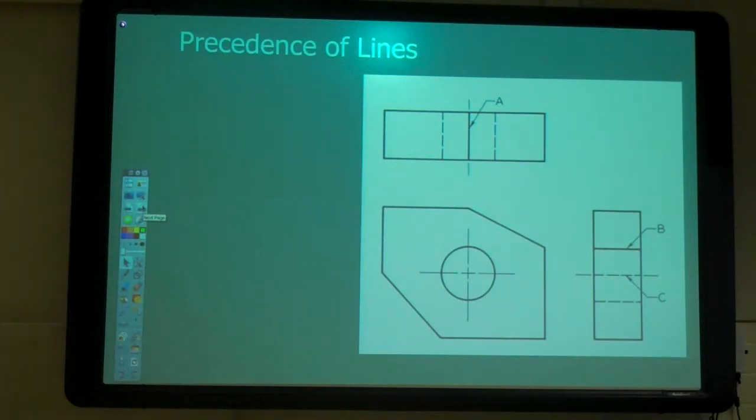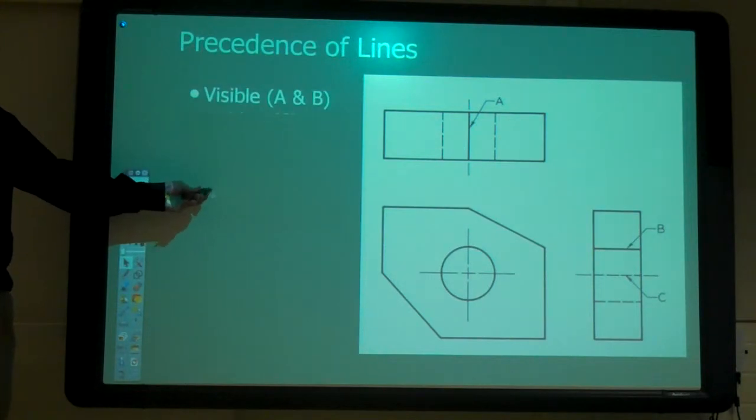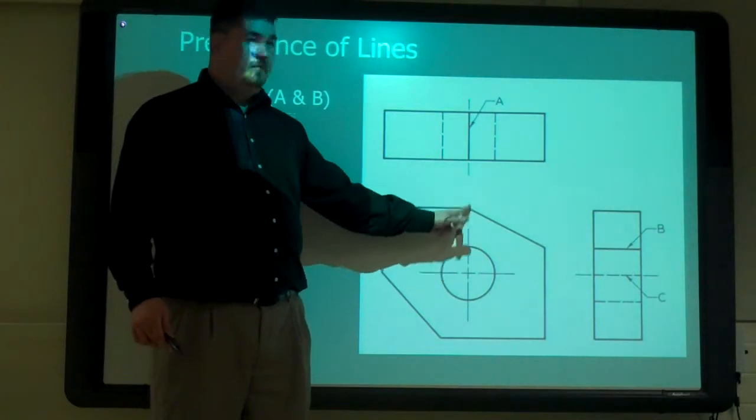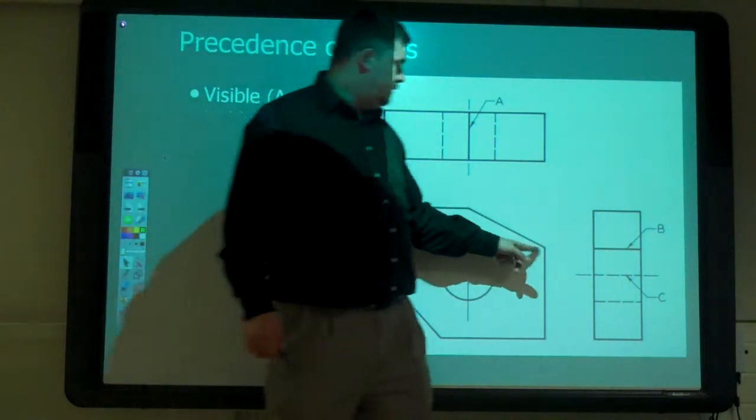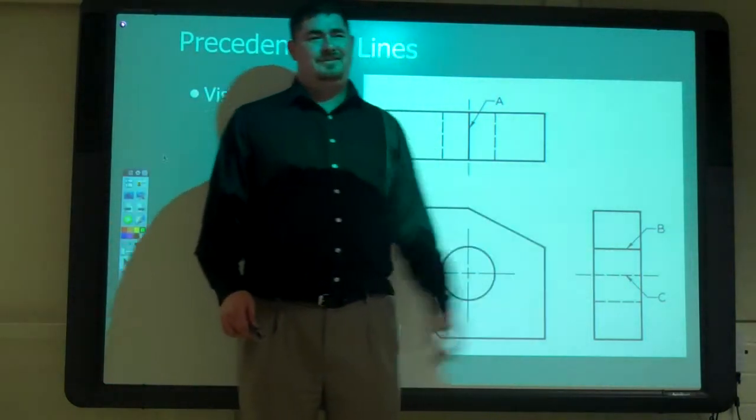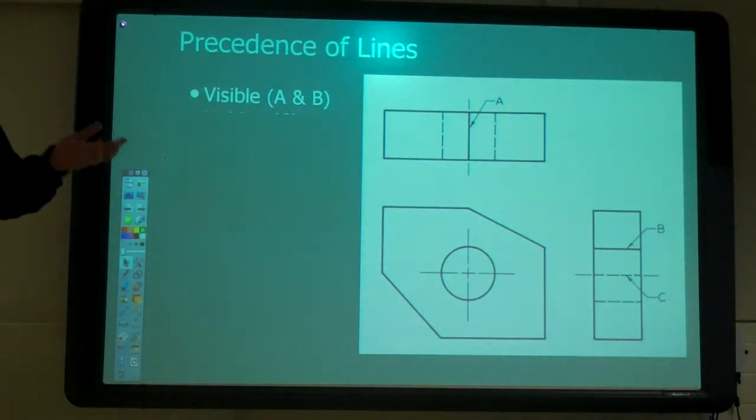Out of those three, which one is most important? Object line. Object line, right? If you have two lines on top of each other, either an object line and a center line or an object line and a hidden line, you show the object line because you want to see the outside of the part. That's the most important thing.